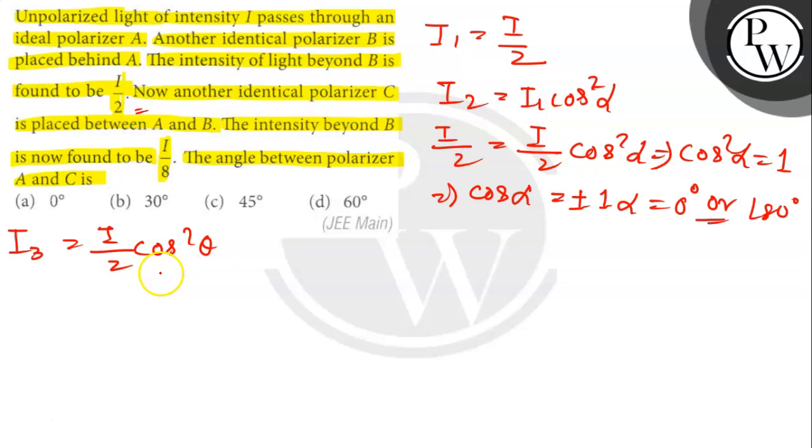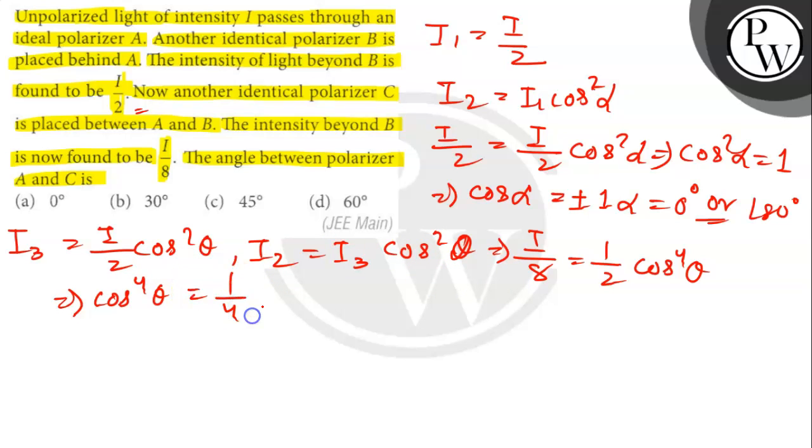Again, when it passes B, I2 will be I3 cos square theta. So here, I by 8 equals I by 2 cos square theta, given I2 is I by 8. So here cos square theta equals 1 by 4.